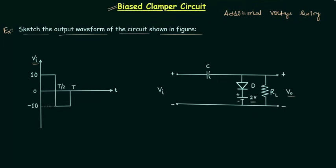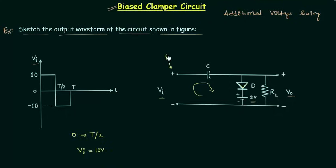I will analyze this circuit for the first half cycle from 0 to T/2. The input voltage Vi is 10 volts and it is positive, so the polarity of Vi is plus-minus. This terminal is positive and this terminal is negative. The direction of current is clockwise, which is similar to the direction of the arrow in the diode symbol, so the input voltage will forward bias the diode D. However, the 2V additional DC voltage source will reverse bias the diode D. Since Vi is greater than 2V — it is equal to 10V — the diode is finally forward biased.